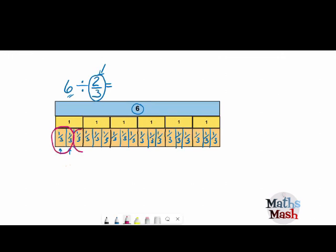So there's 1 group of 2 thirds. Another group. Another group of 2 thirds. Another group of 2 thirds. Another group of 2 thirds.